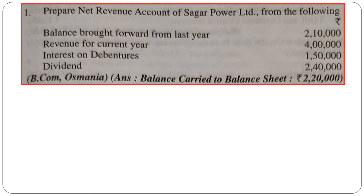This is a significant change when compared to other profit and loss accounts and profit and loss appropriation accounts versus revenue and net revenue account. The basic significant difference is that interest on debentures and interest on any securities as an income will be taken in net revenue account. Once you read the question, you simply need to prepare the account.